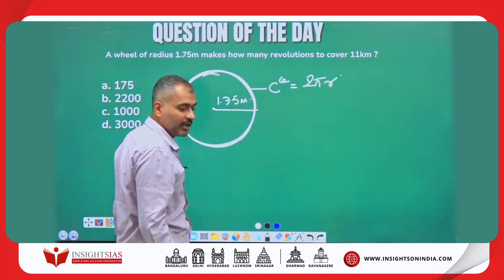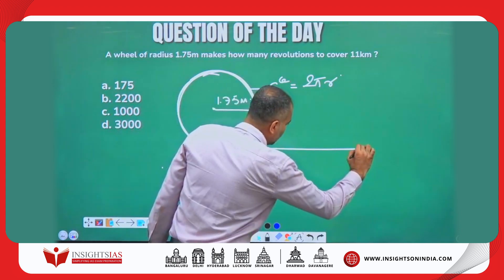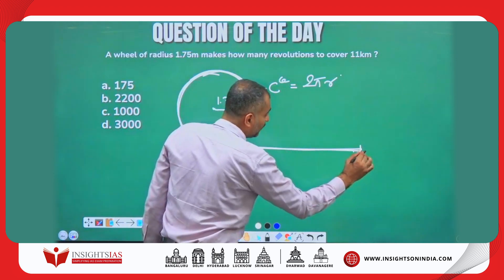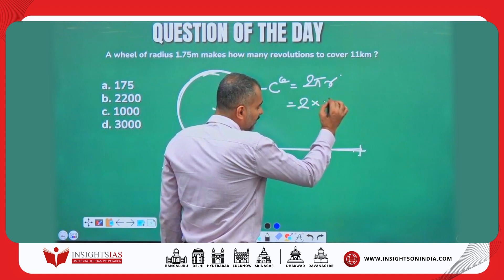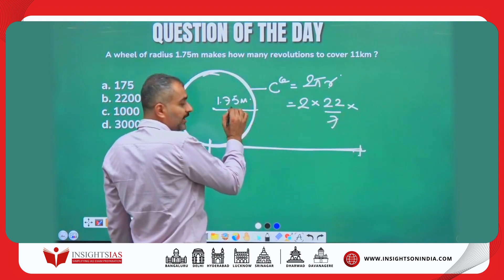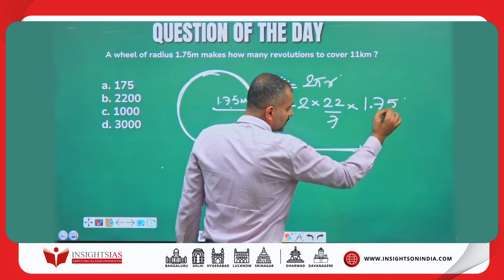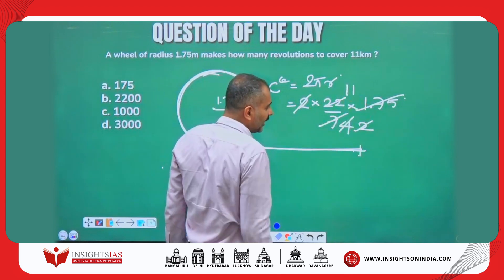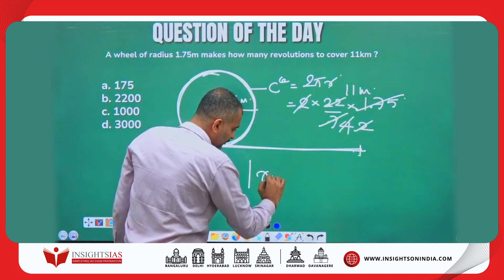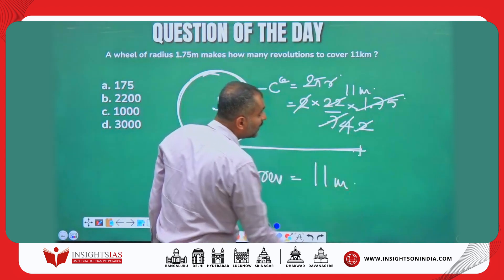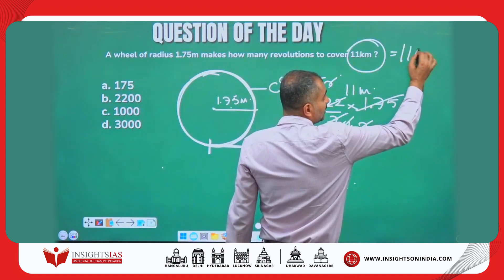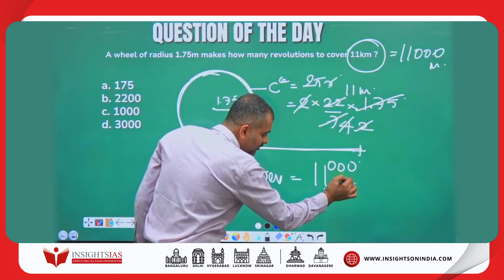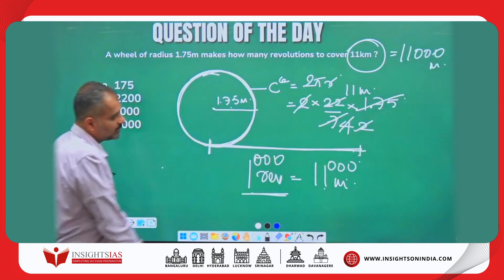The circumference of a circular wheel is 2πr. If you cut and stretch the wheel, in one revolution it covers 2πr. So 2 × (22/7) × 1.75 = 11 meters per revolution. The total distance is 11 kilometers = 11,000 meters. So the number of revolutions = 11,000 ÷ 11 = 1,000 revolutions.